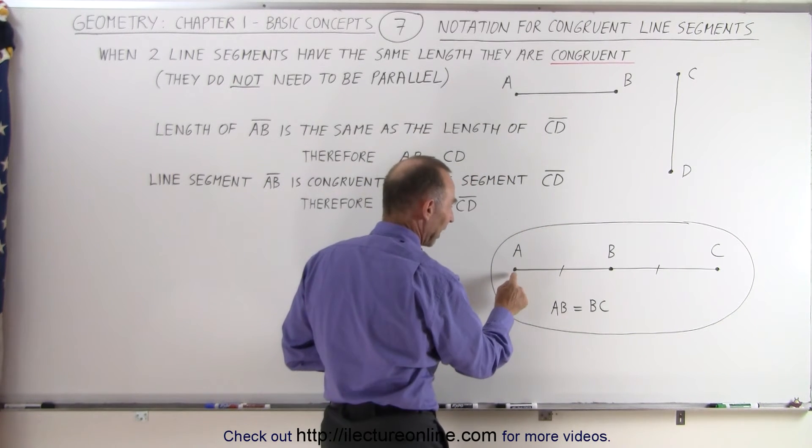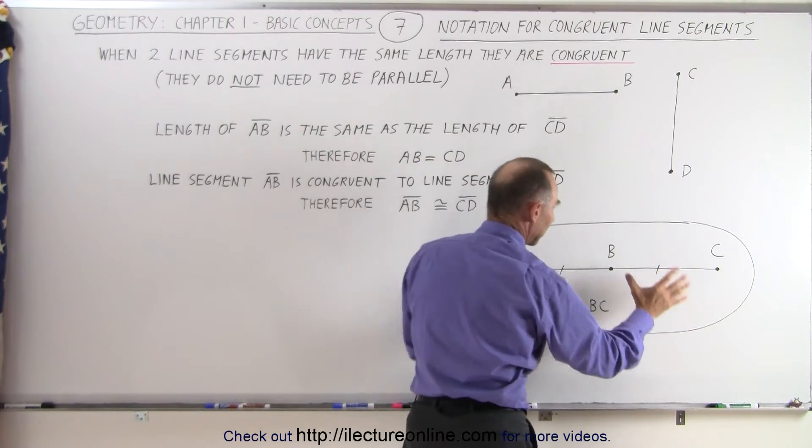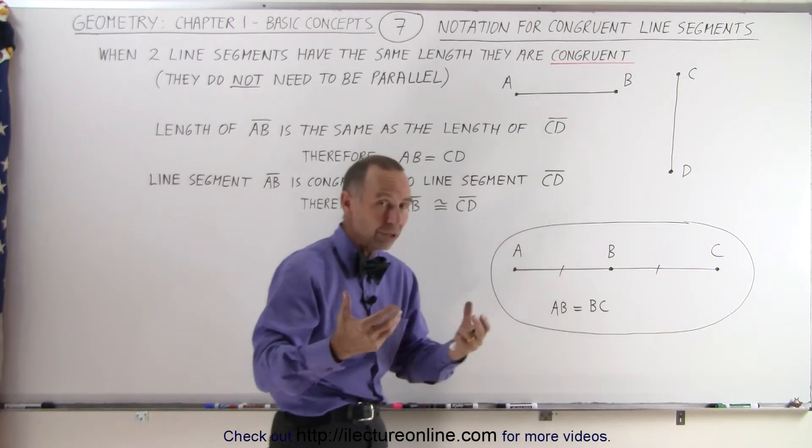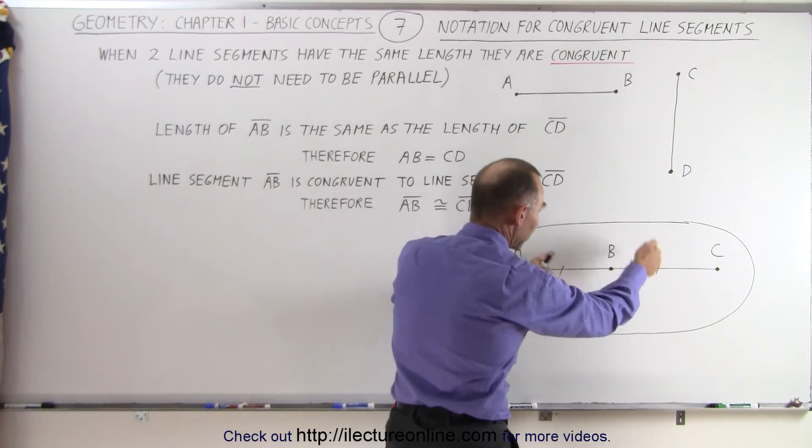Here we can see we have a line segment from A to B and a line segment from B to C. By inspection, you can see they appear to be the same length. We can show they're the same length by making a little tick mark there.